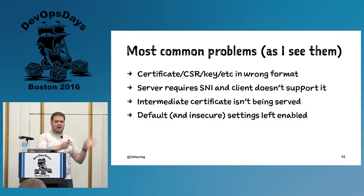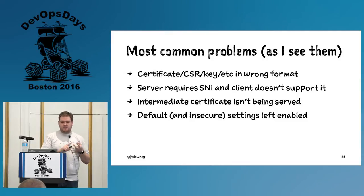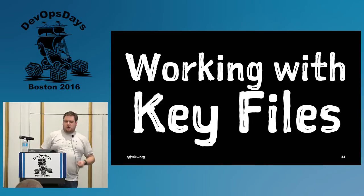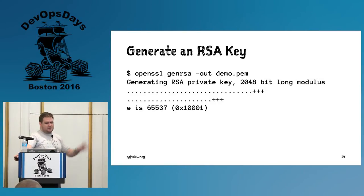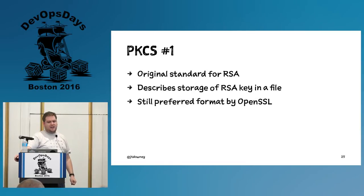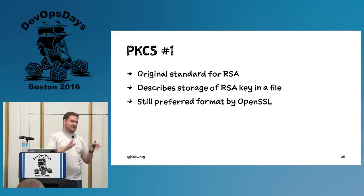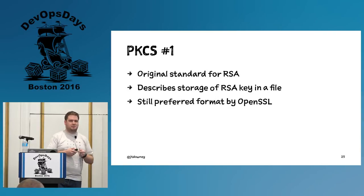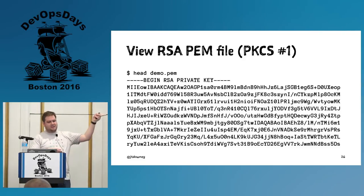For the rest of this I want to talk about the common problems I've seen: files in the wrong format, servers and SNI, intermediate certificates, and insecure default settings. Let's talk first about working with key files. You can generate an RSA key file from OpenSSL — it'll figure out some large prime numbers for you. By default, OpenSSL dumps out something for RSA in PKCS#1 format, which was the original standard for RSA describing only the storage of RSA keys in a file. When you look at it, it says 'BEGIN RSA PRIVATE KEY' — the 'RSA' in the header is what makes it different.